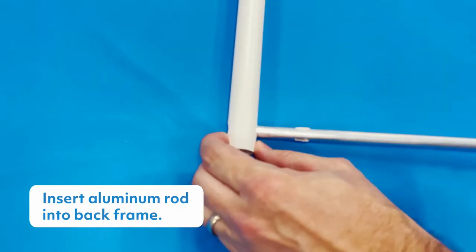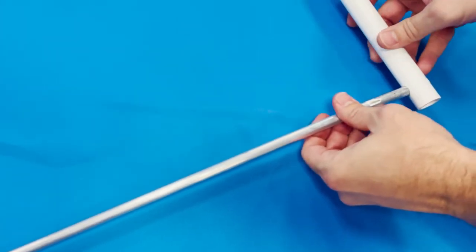Insert the aluminum rod into the pre-drilled holes on the ends of the back frame and push through into place.